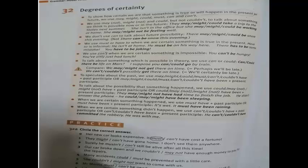To talk about degrees of certainty in the past, we use 'may/might/could/must/can't/couldn't + have been + present participle', or 'may/might/could/must/can't/couldn't + have + past participle.'